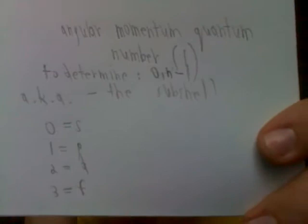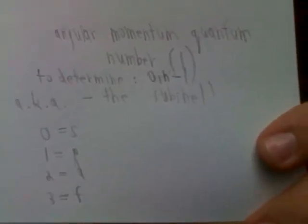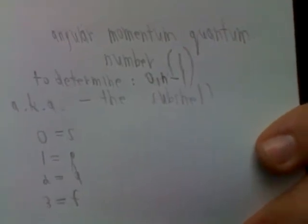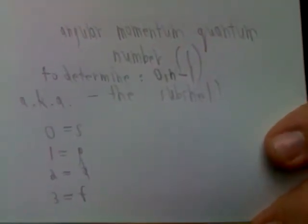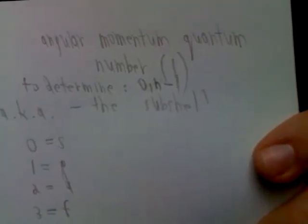The angular momentum quantum number is actually the number of subshells that exist within that particular shell. You determine the L value for each n by taking all the numbers between 0 and n minus 1. So if we have a principal quantum number of 1, the only value of L is 0.